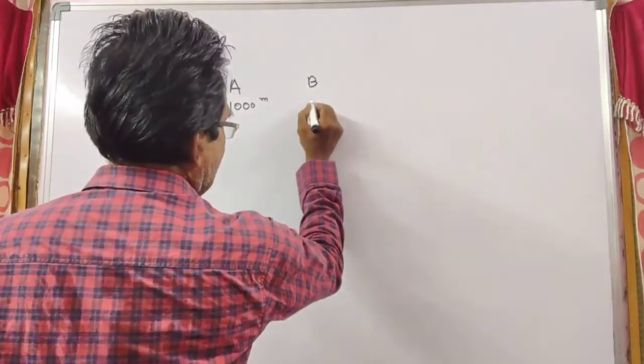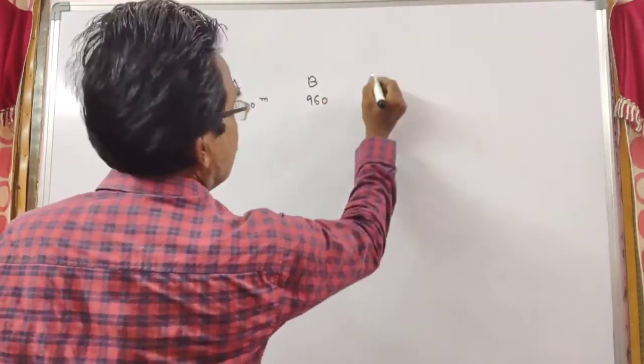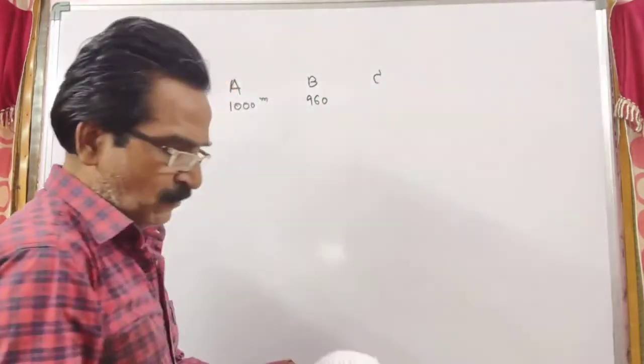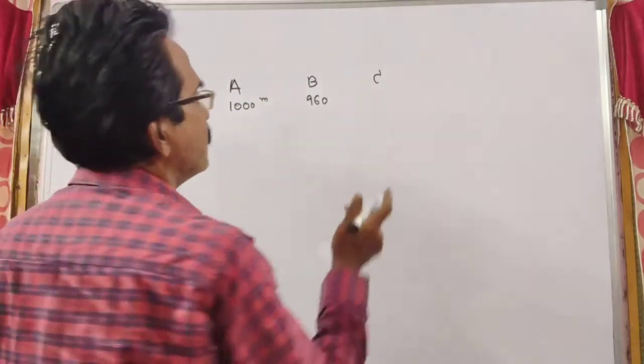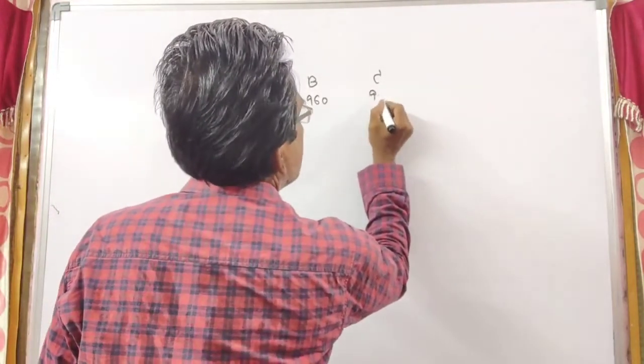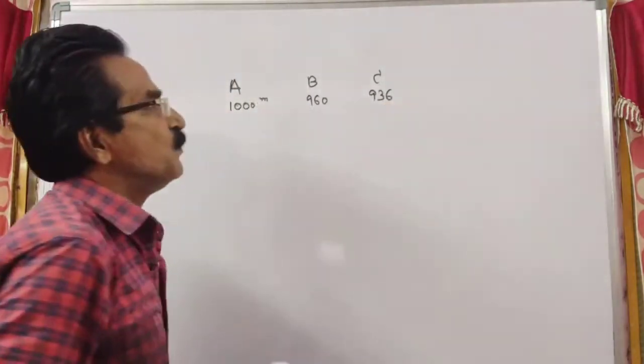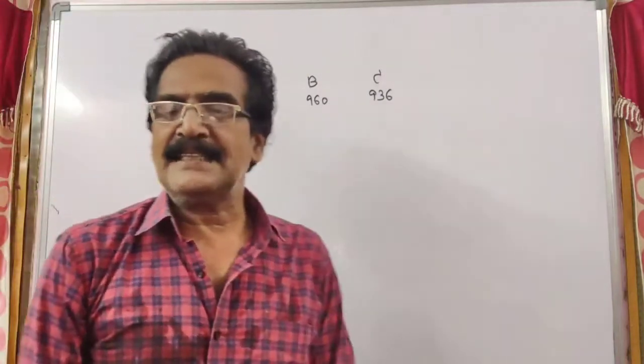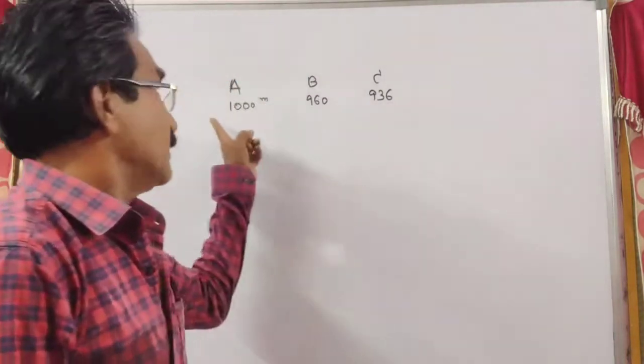And A gives C a start of 64 meters. That is, C needs to run only 936 meters. This is first line.